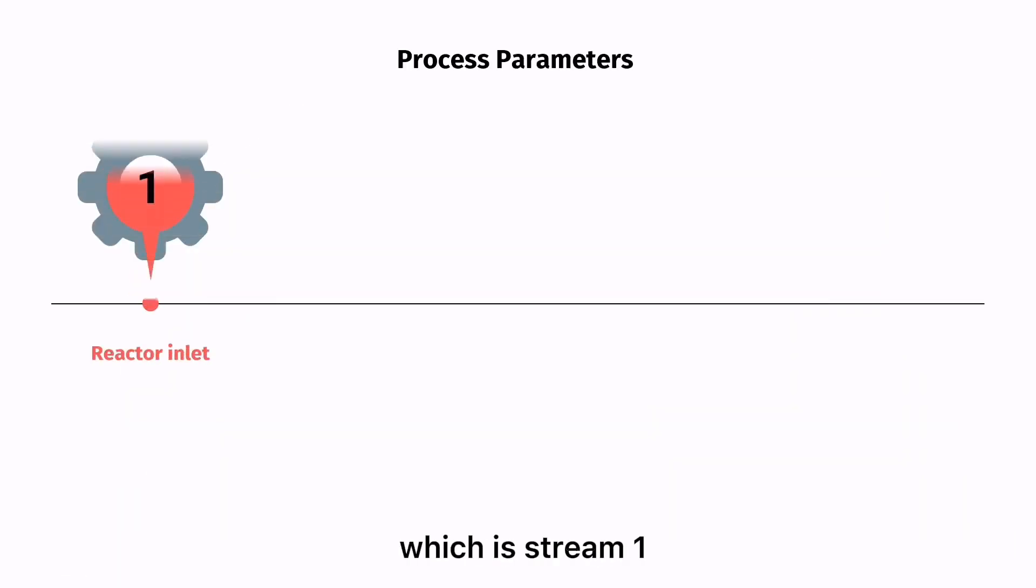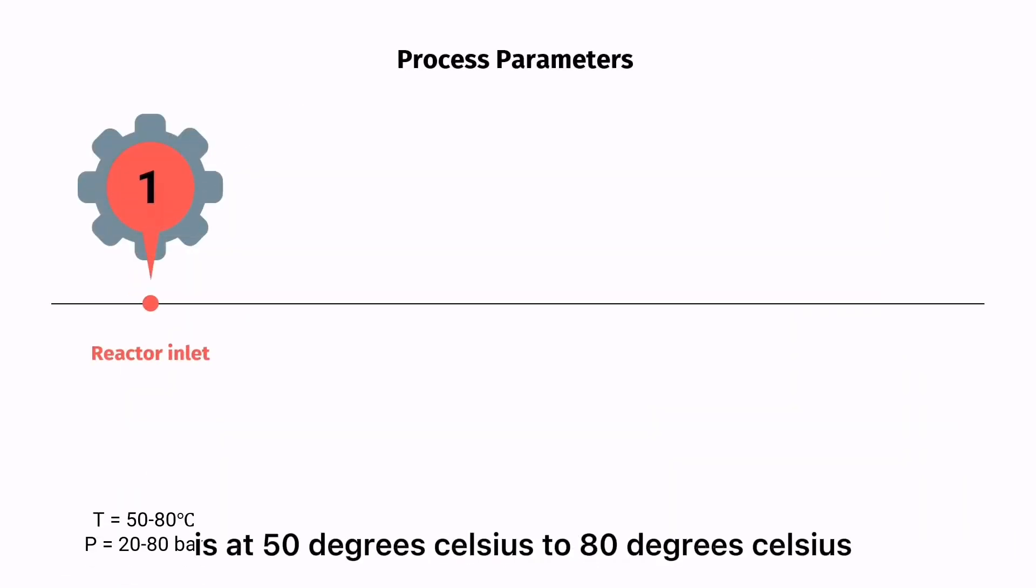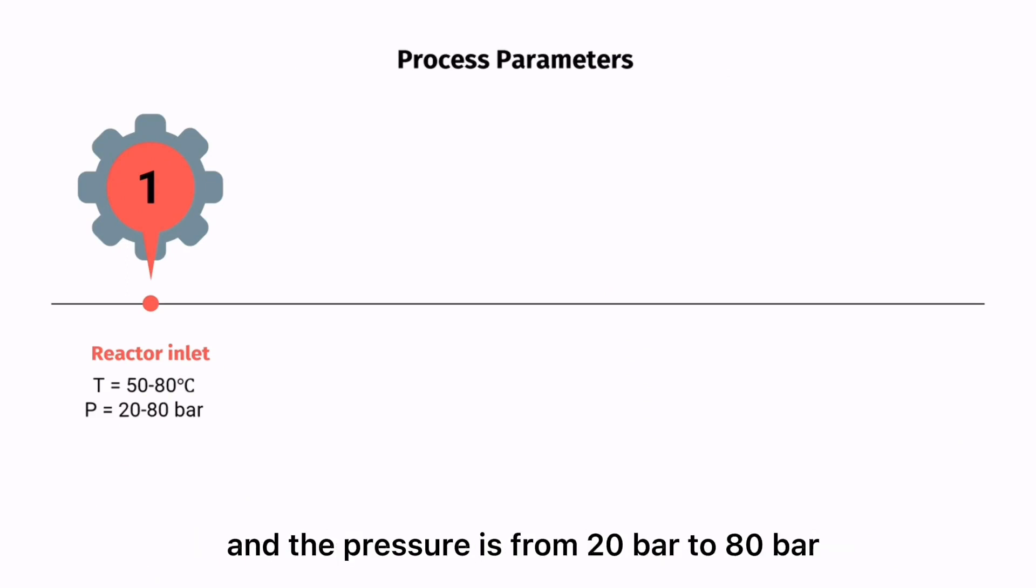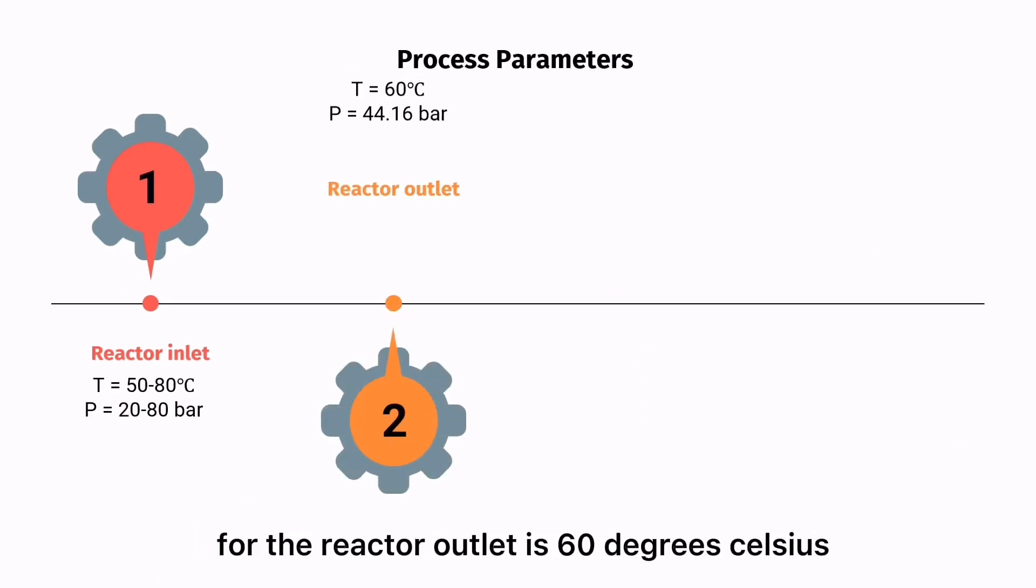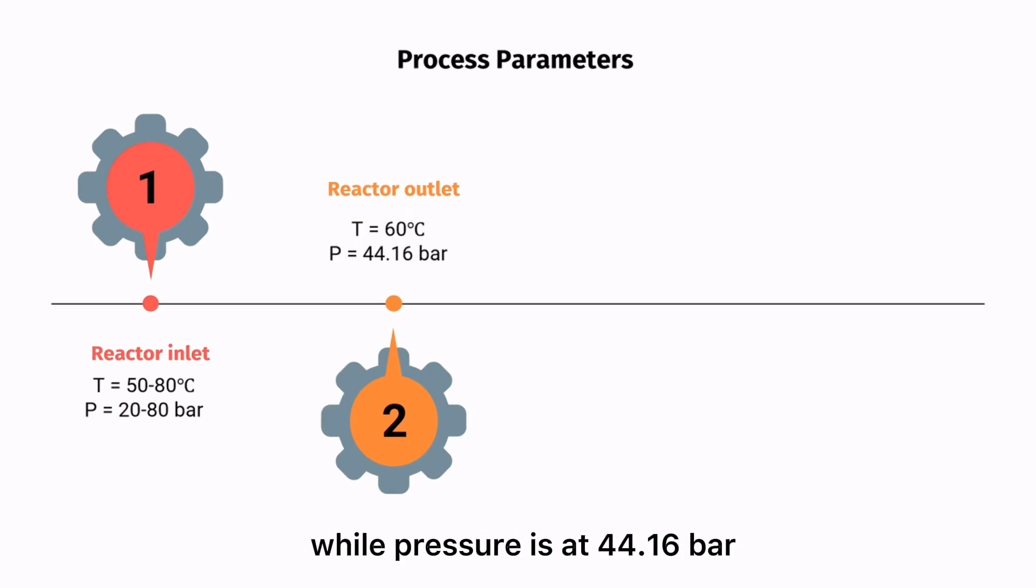Process parameters: For reactor inlet which is stream 1, preferable temperature is at 50 degrees Celsius to 80 degrees Celsius and the pressure is from 20 bar to 80 bar. Temperature for the reactor outlet is 60 degrees Celsius while pressure is at 44.16 bar.